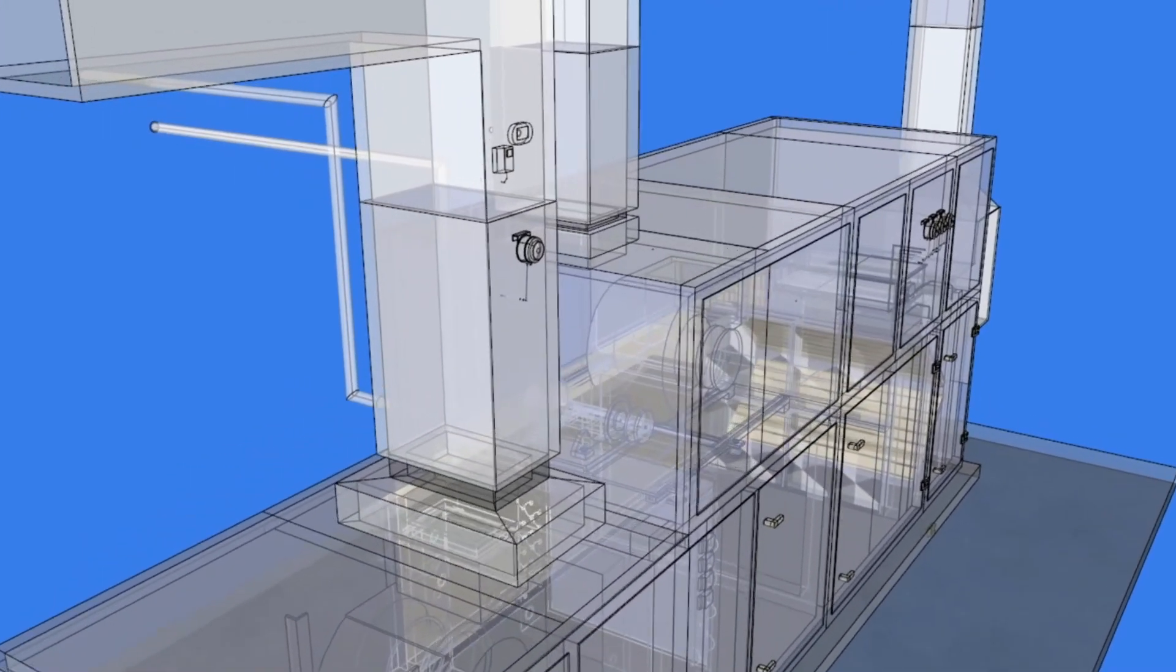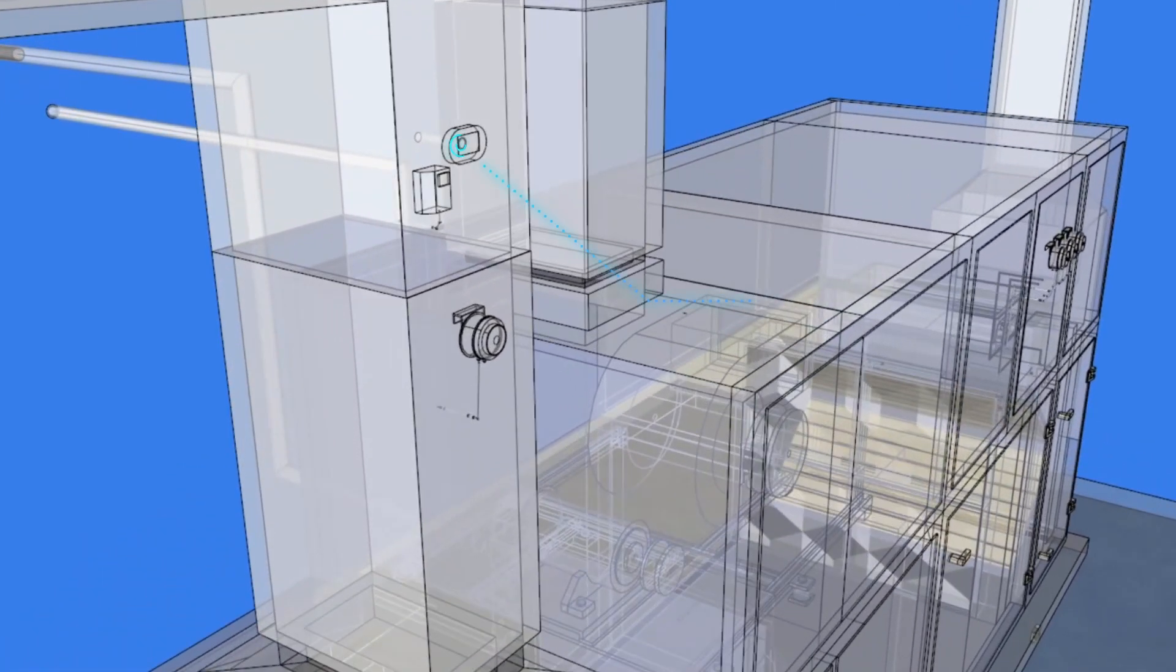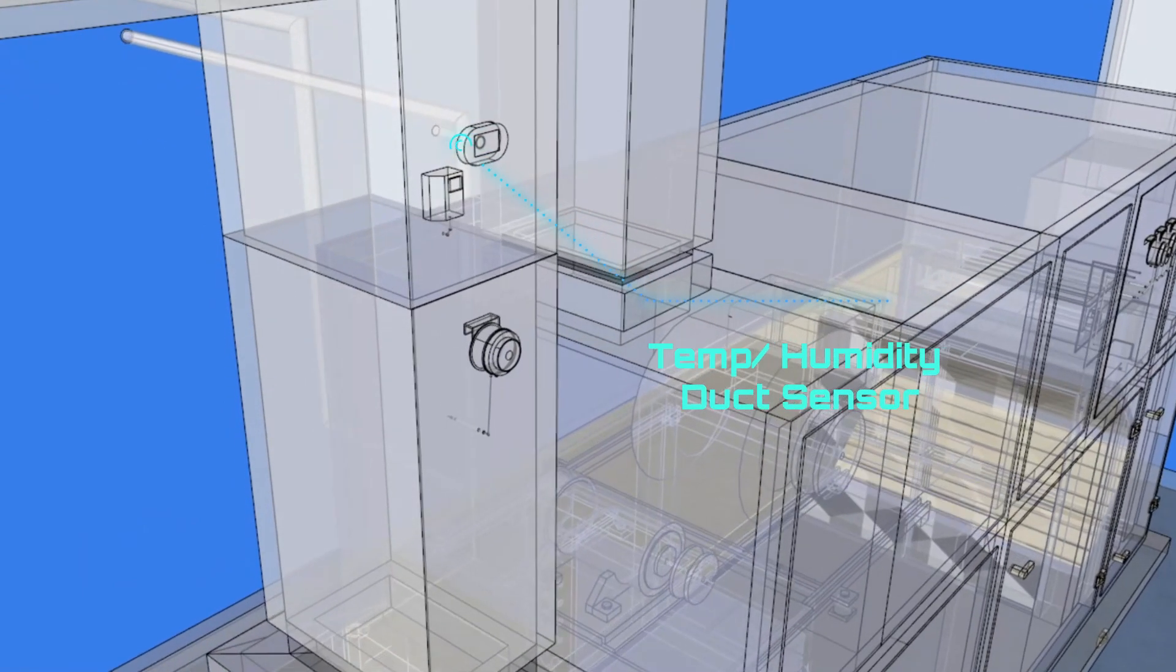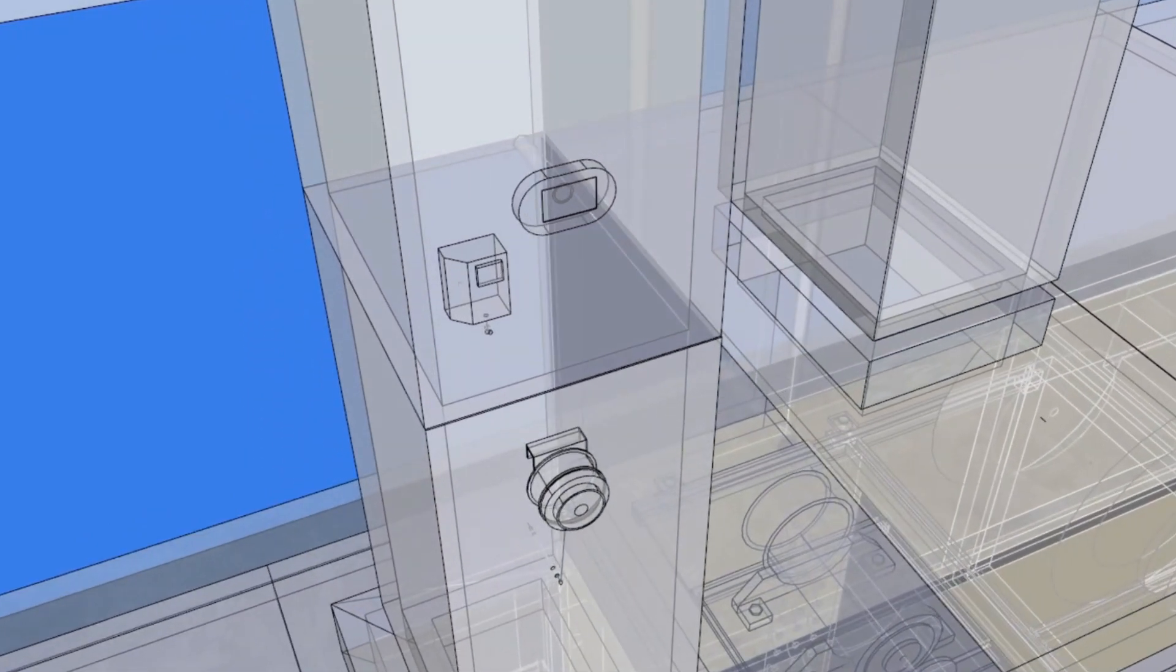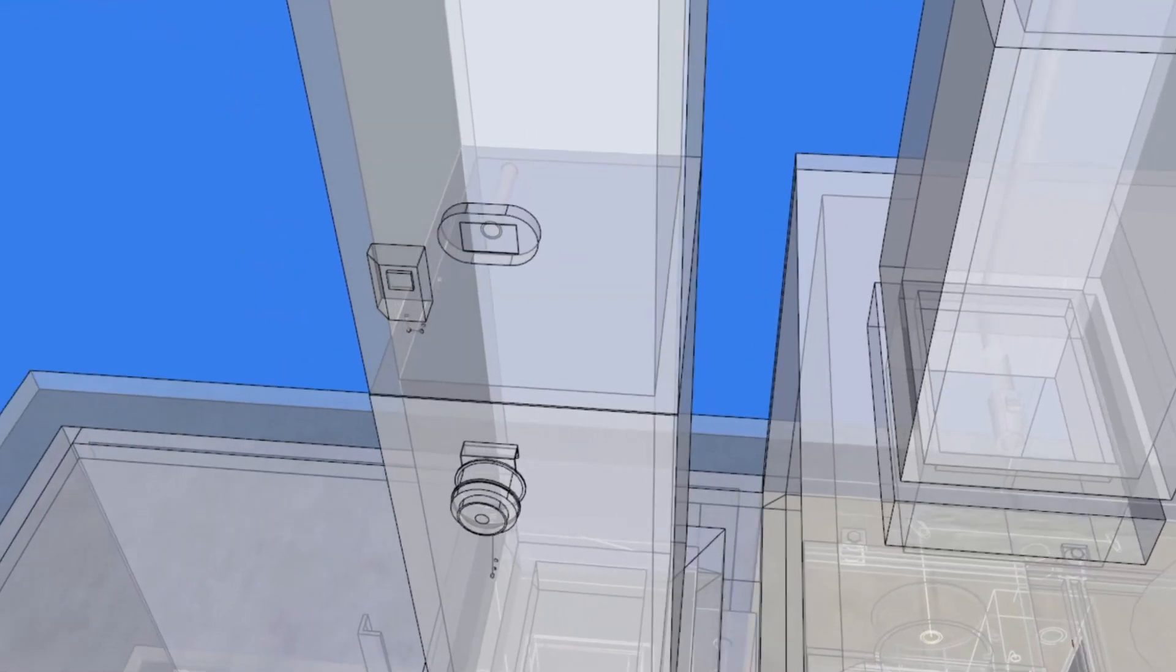The duct sensor is designed to be mounted directly to a duct with the probe in the air flow. The sensor acquires the temperature and relative humidity in the air duct via its capacitive sensing element.